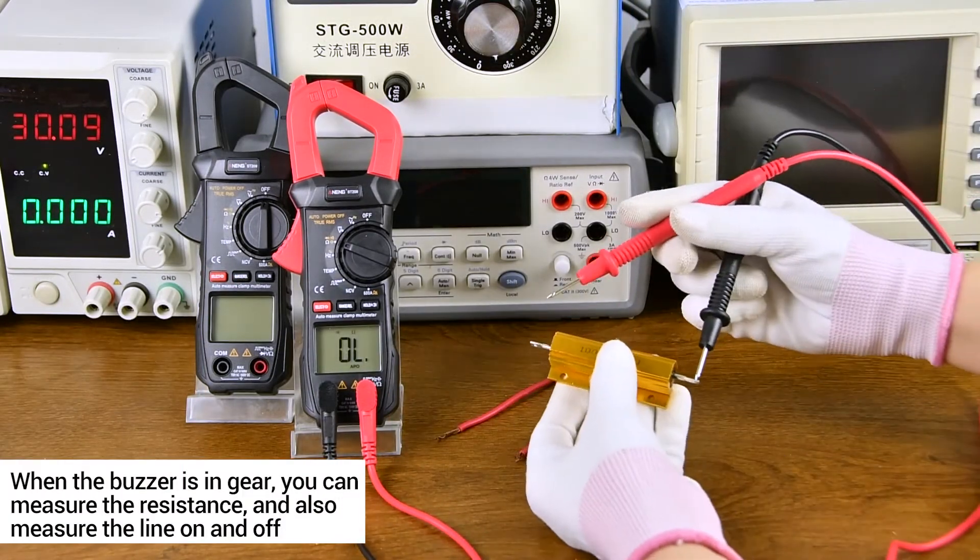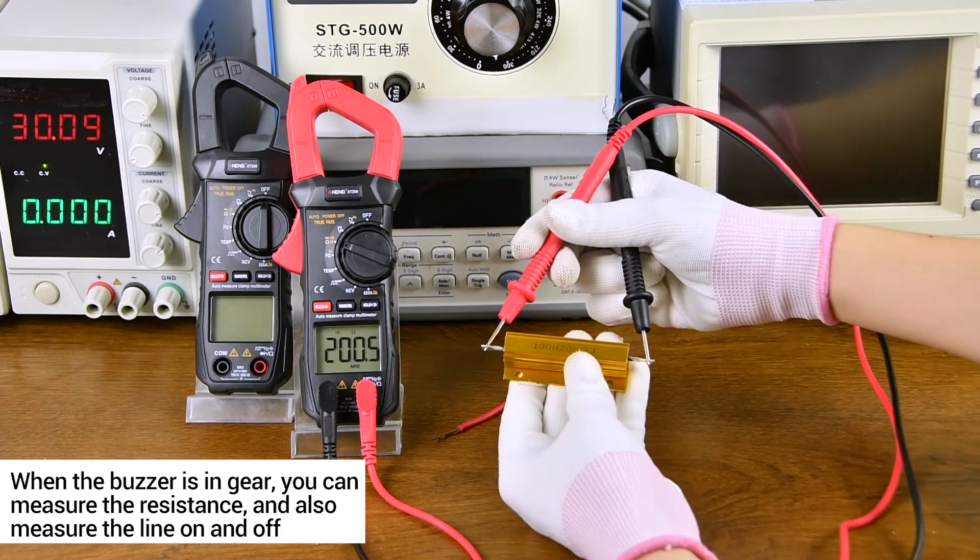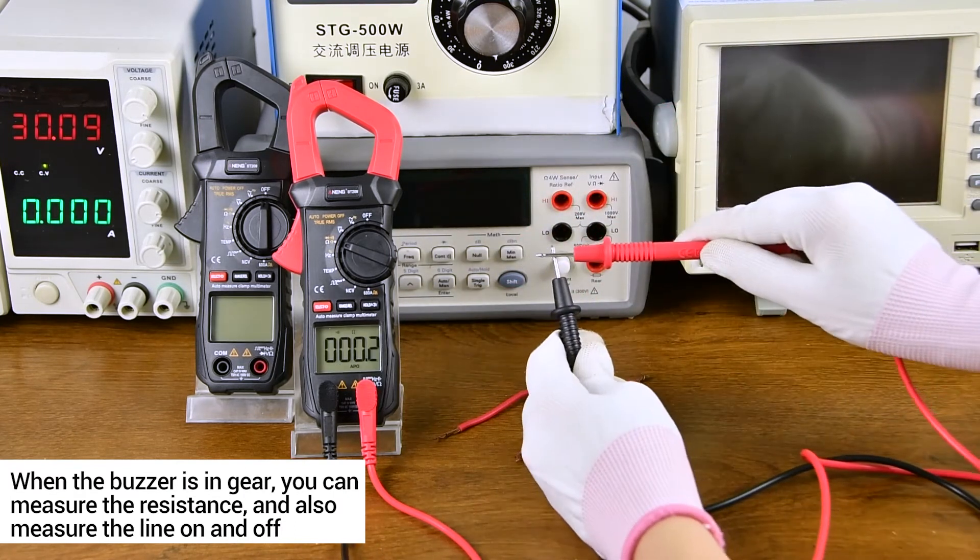When the button is in there, you can measure the resistance and also measure the line on and off.